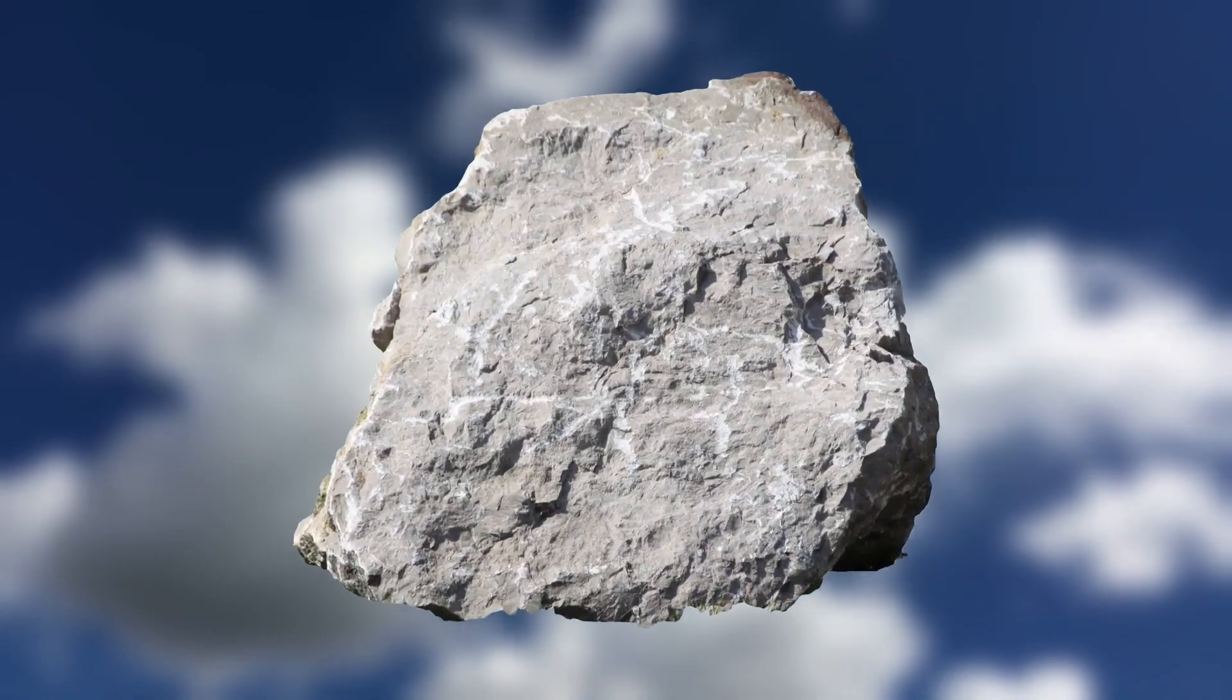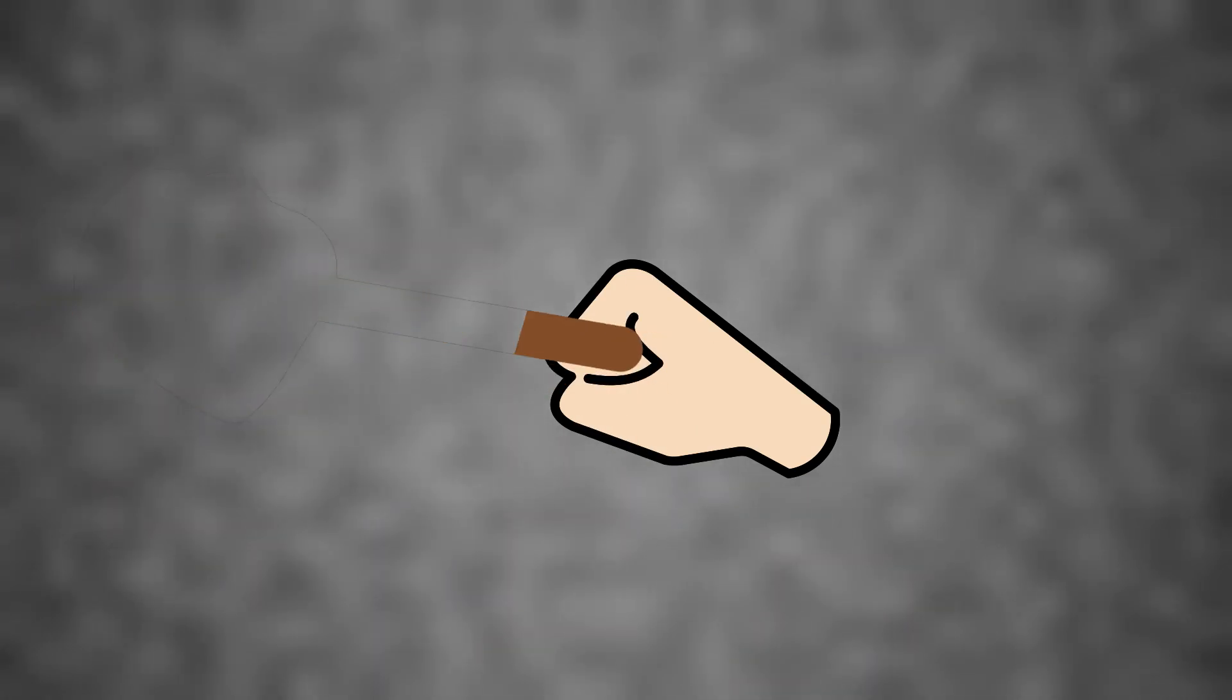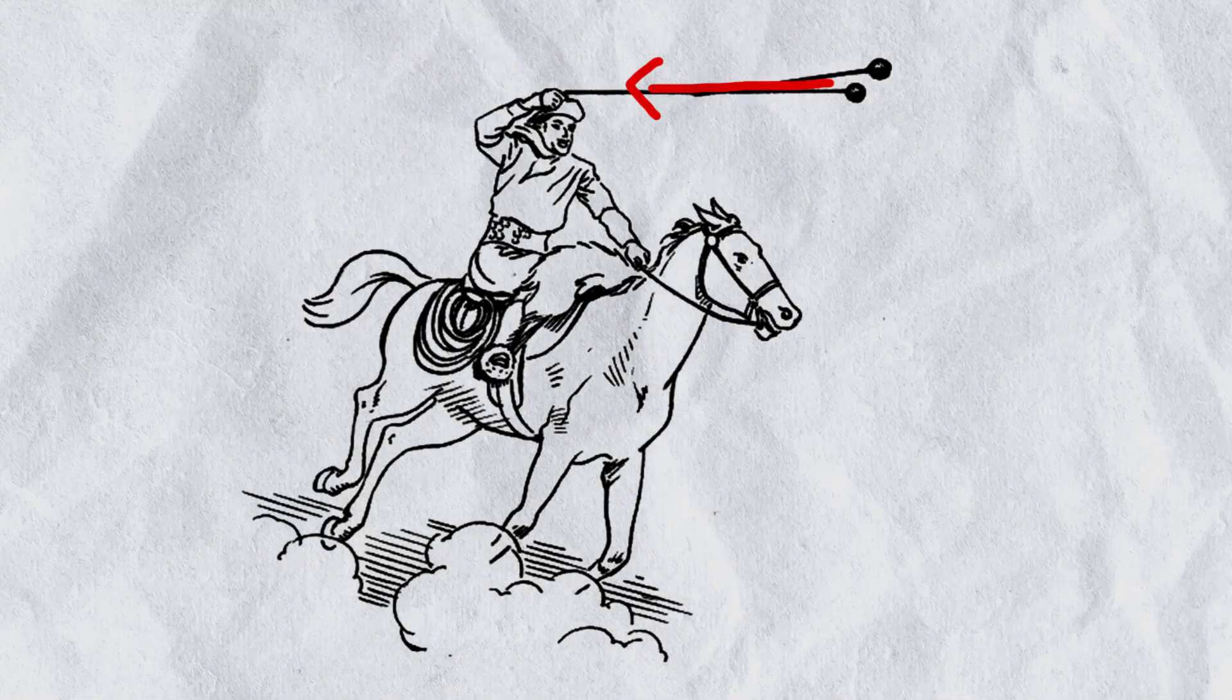In reality, the rock wants to continue moving in a straight line, which is exactly what would happen if you subtly cut the rope. But the rope keeps pulling it toward the center.